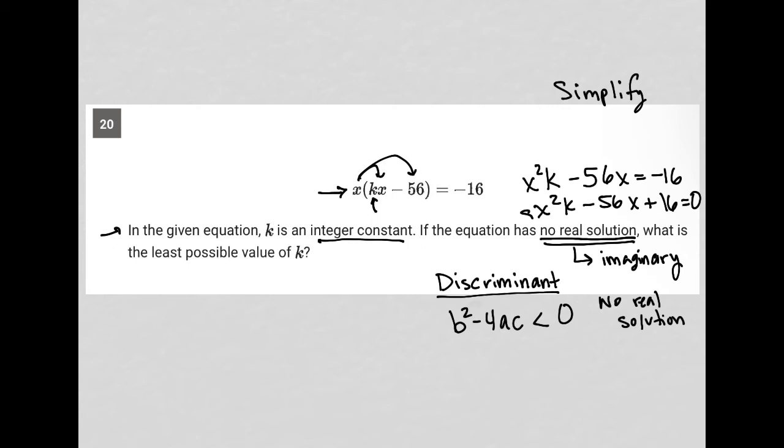For us, which is why I put it in this format, our a value is k. Let me make this clear. The quadratic equation is x²k - 56x + 16 = 0. That's a positive 16, not negative.